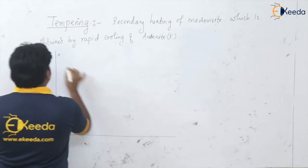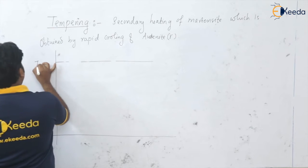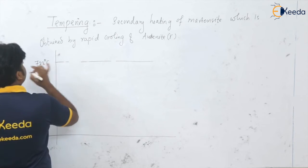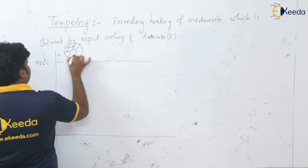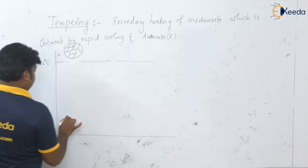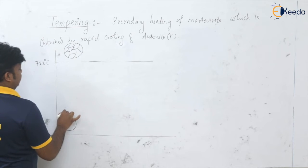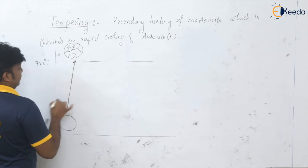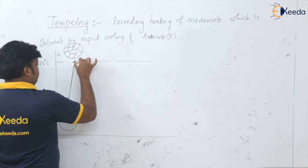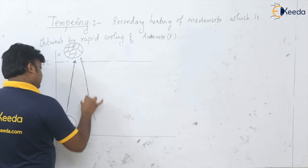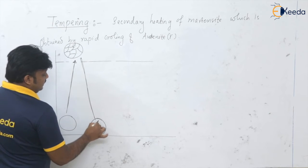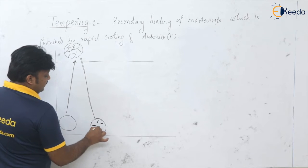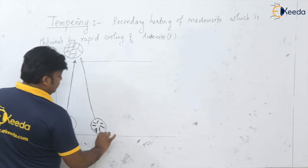Here we can see the lower critical temperature at 723 degrees centigrade, and above this everything is gamma austenite. This was our initial sample and we heated it to the austenitic range. After that, when we cool this austenite to room temperature — in a water bath, salt bath, or oil bath — we get this needle-like structure, which is nothing but martensite.